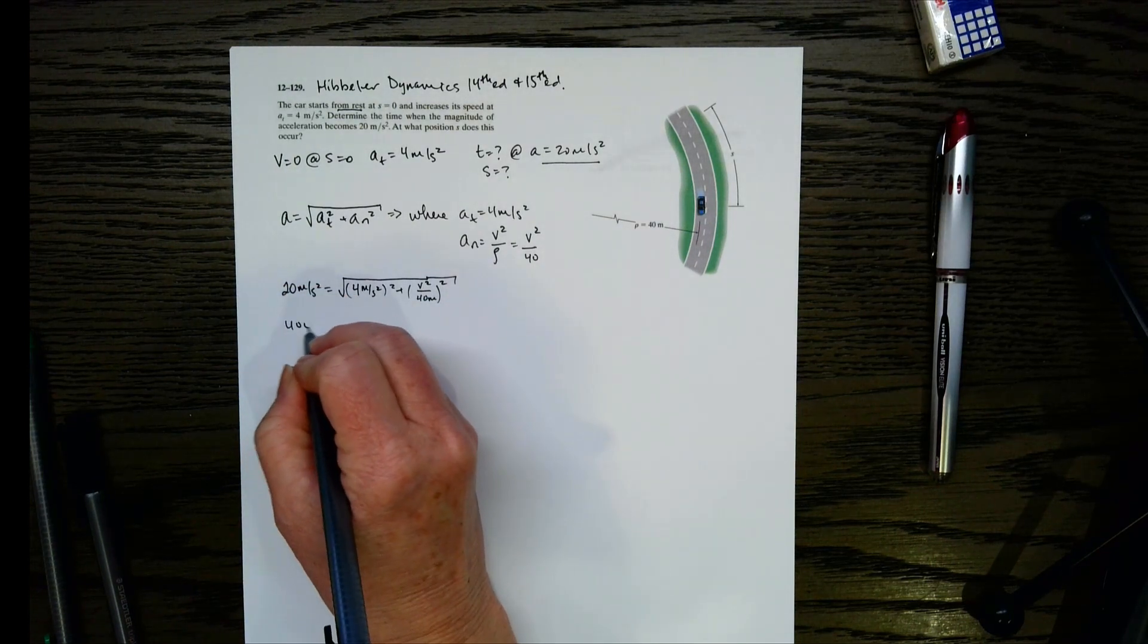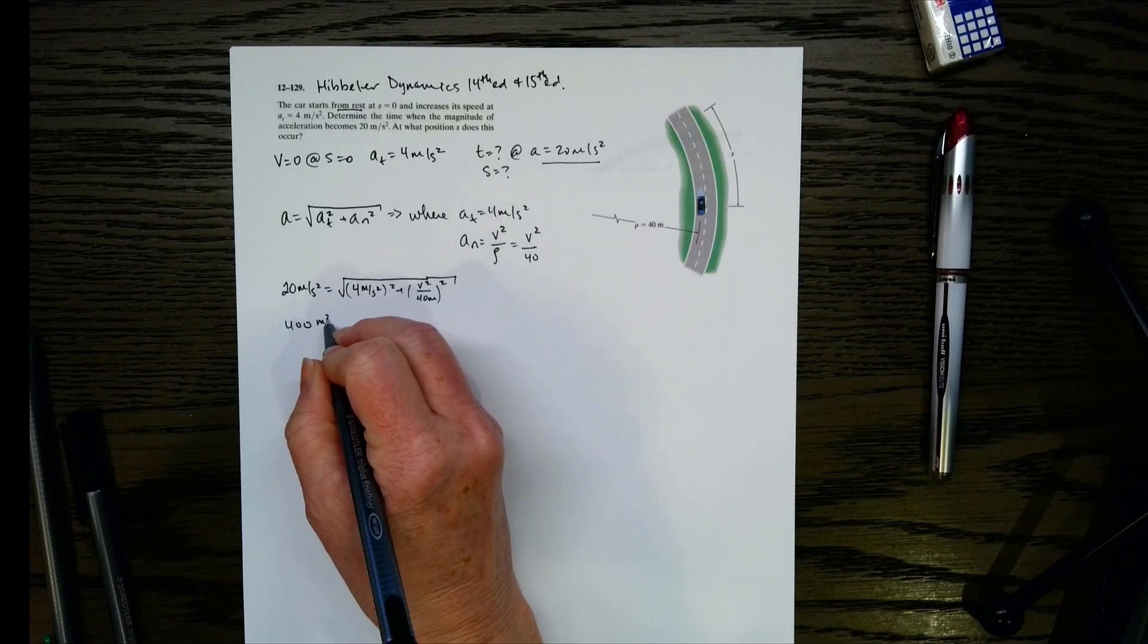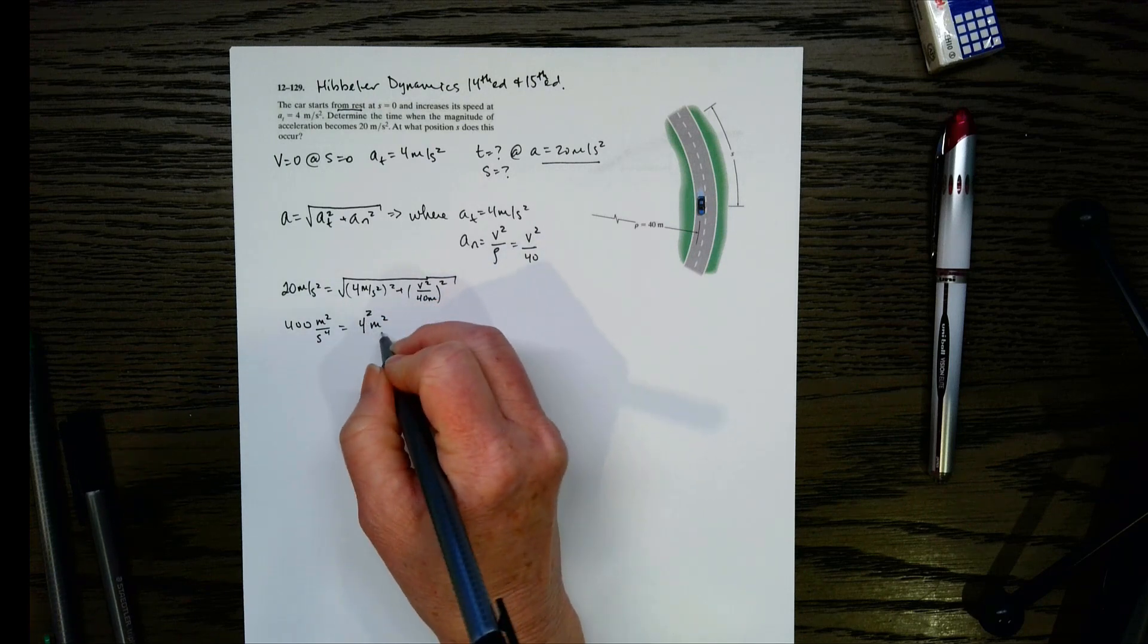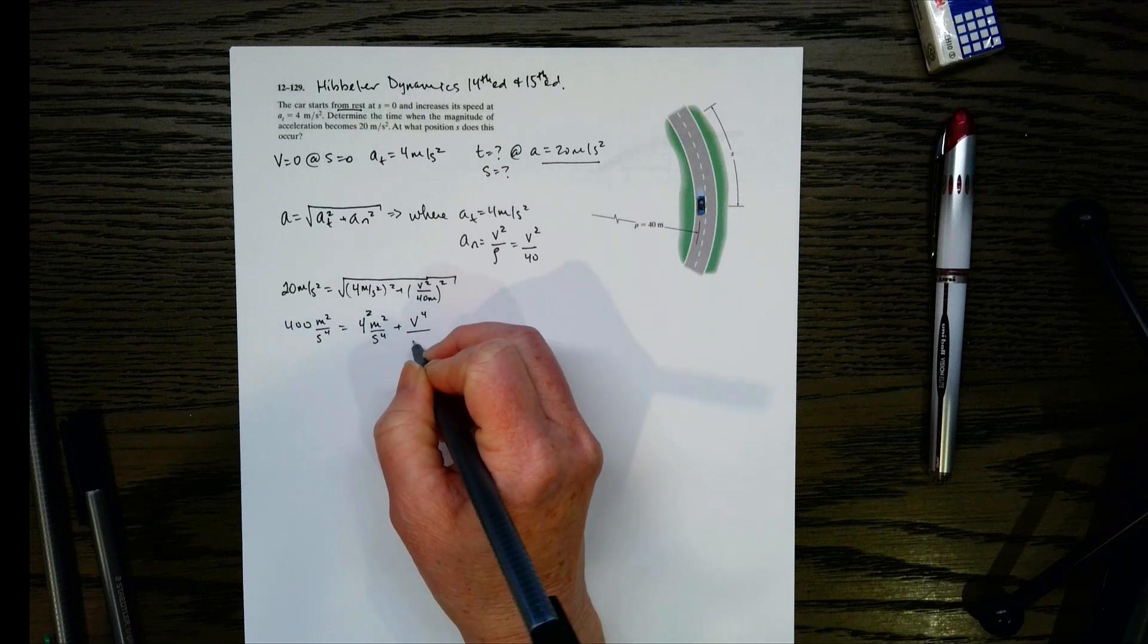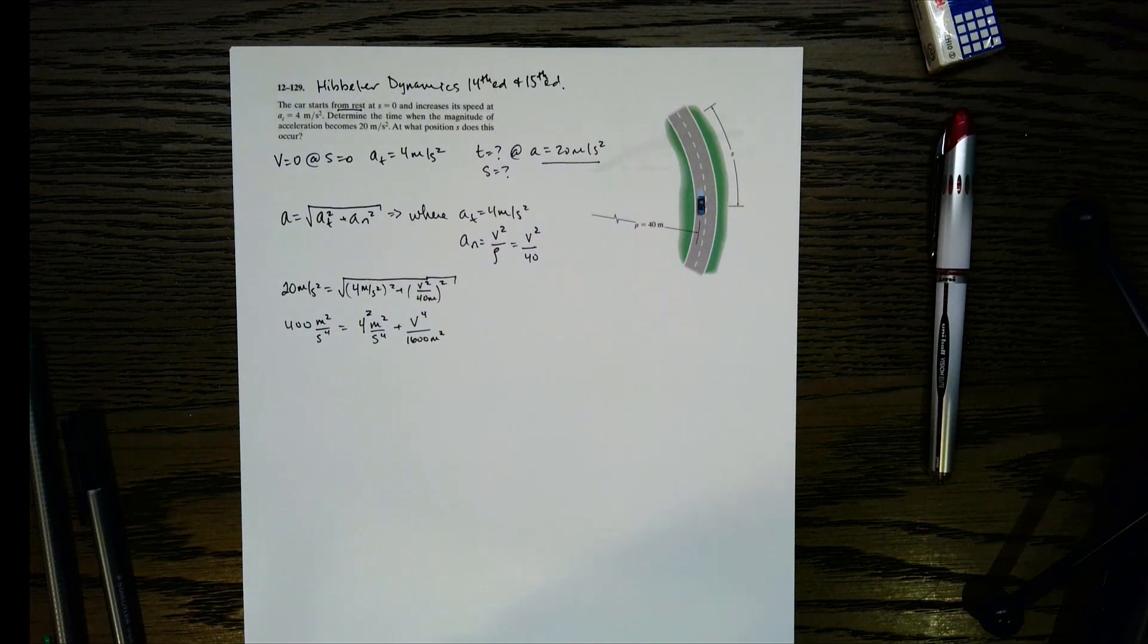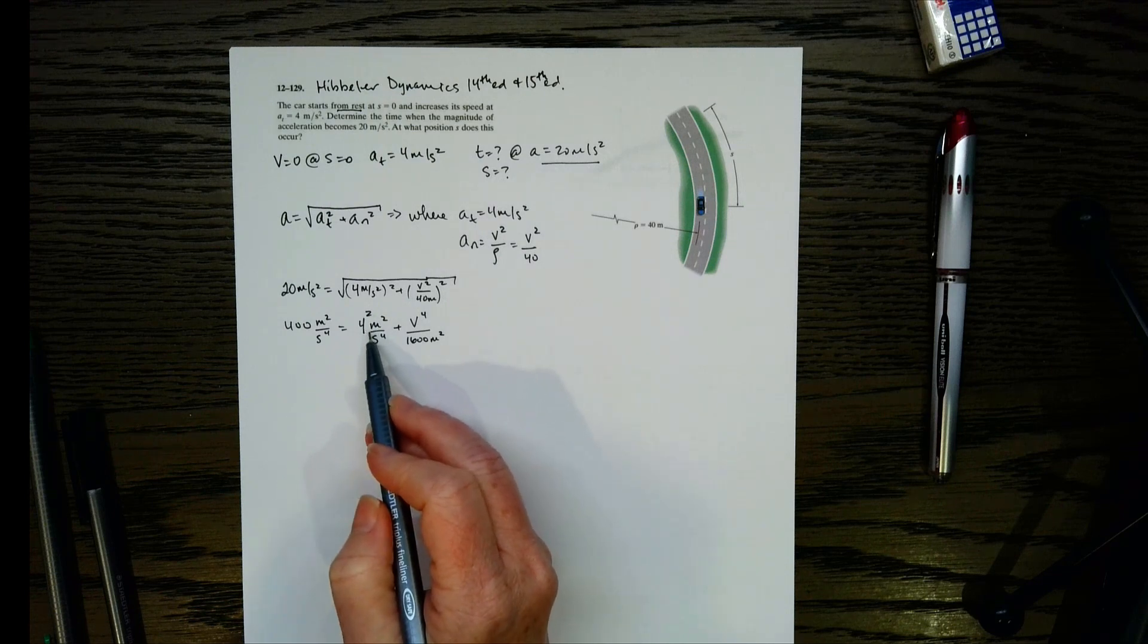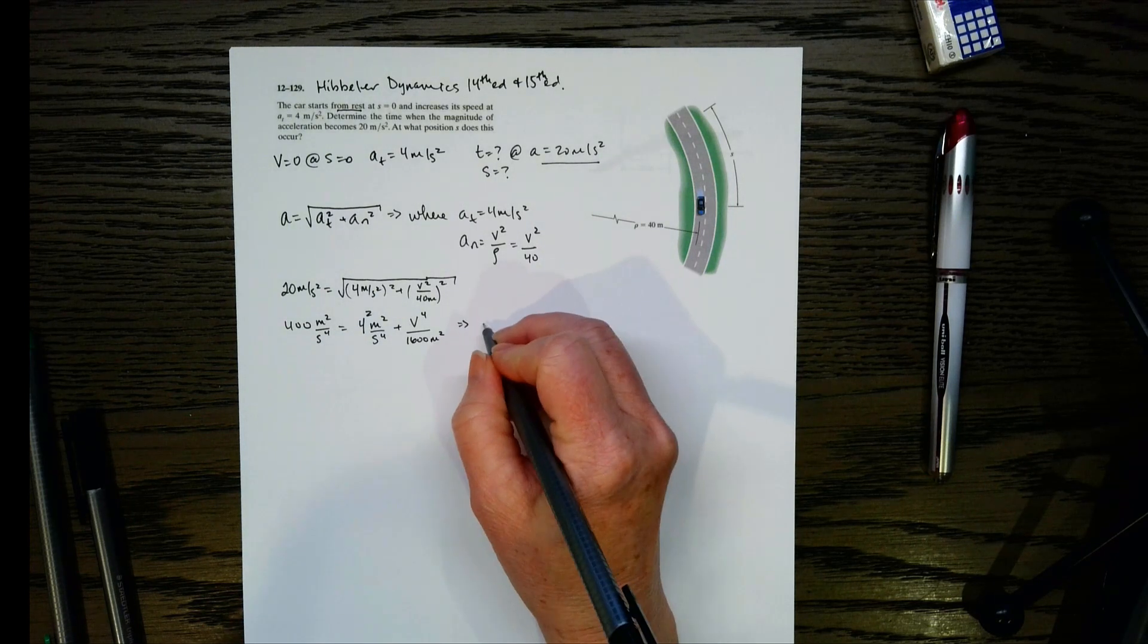So let's do that. Let's square both sides. So we'll have 400, and then we've got 4 squared meters squared per second to the fourth plus v to the fourth over 1,600 meters squared. So now we've got that, so you can go ahead and do the algebra to get v. Move the 16 over, multiply by the 1,600, and then you get v.